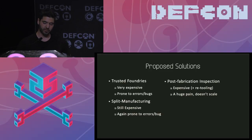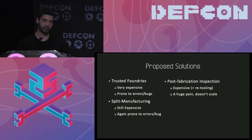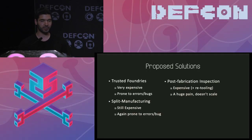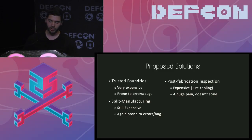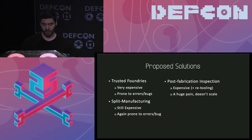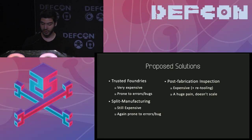The final approach is post-fabrication inspection: you order your integrated circuit, they manufacture it, you get it back and run tests. The problem is it's expensive, you need expensive tools, you need to constantly retool as techniques advance, and if you order a few thousand chips you cannot test all of them - it doesn't scale well. Overall it's an arms race because hardware trojan techniques are constantly advancing, and adversaries will always be a step ahead. You can never be 100% sure nothing went wrong, and even your trusted foundry may betray you.